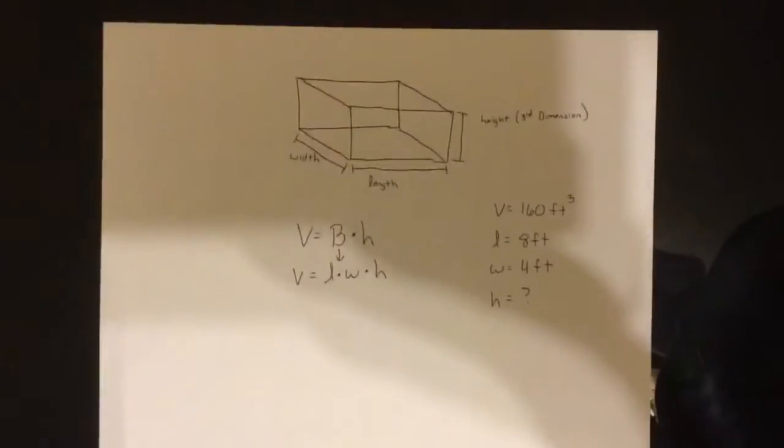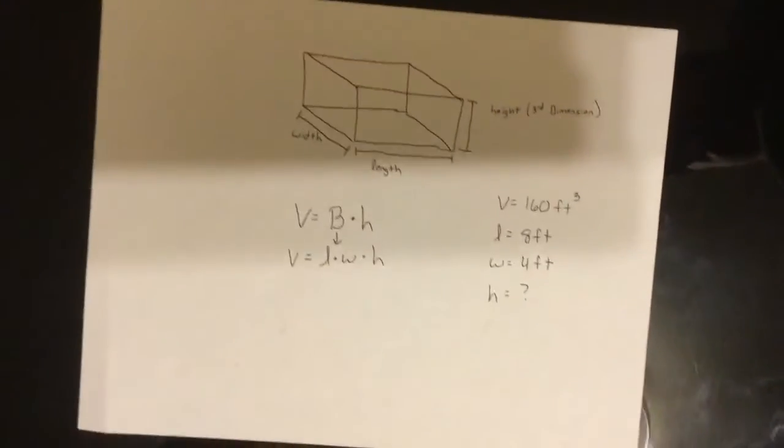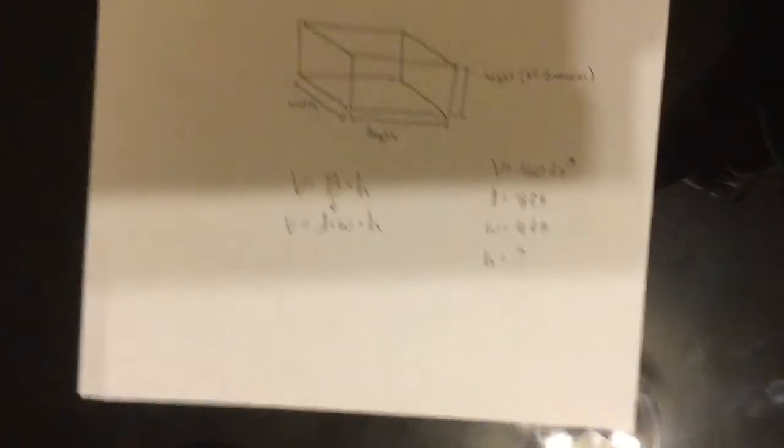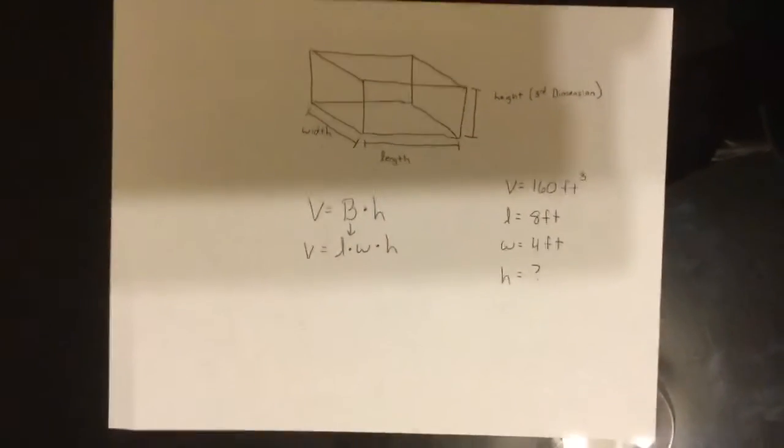Alright guys, it is your boy Mr. Nolan here. On the last video we figured out the volume of rectangular prisms. On this one it's a little bit harder because we are given the volume so we're working backwards.